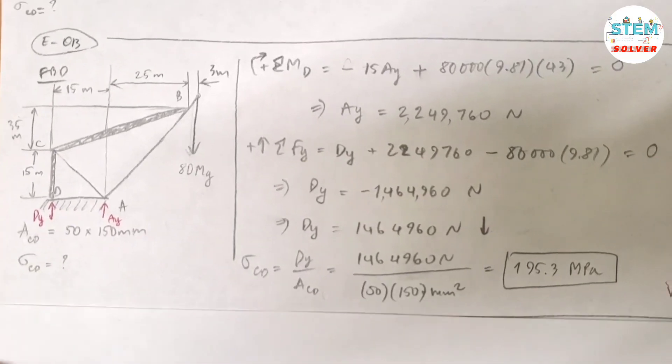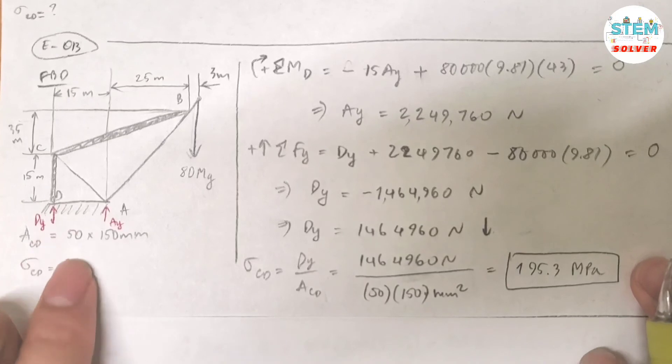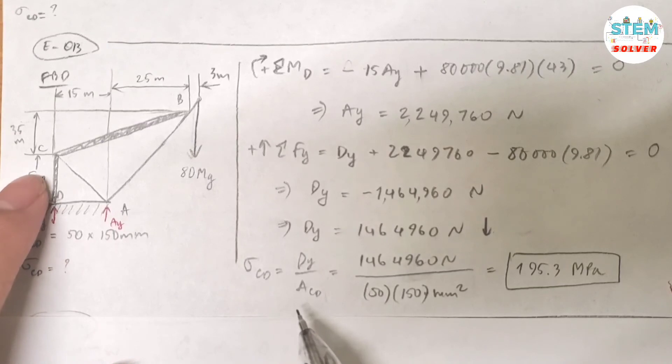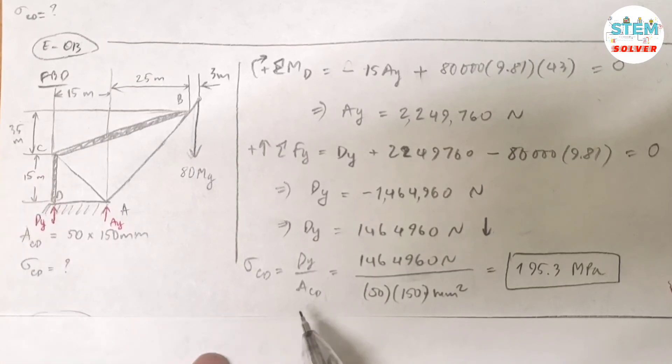Now last step is to find the normal stress in the link CD. I am given the area of CD. I just found the normal force of CD. So now the normal stress is equal to the normal force DY divided by the area of link CD, which is this. So I ended up getting 195.3 MPa.